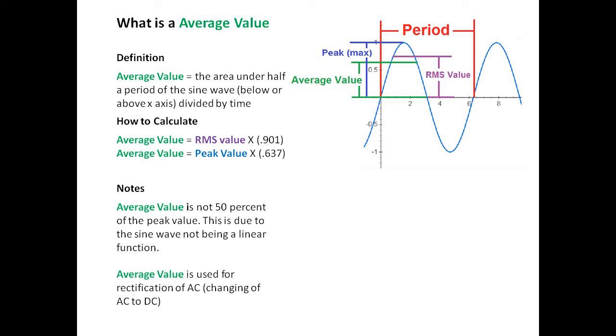You can calculate the average value by taking the RMS value times 0.901, or you can take the peak value times 0.637.